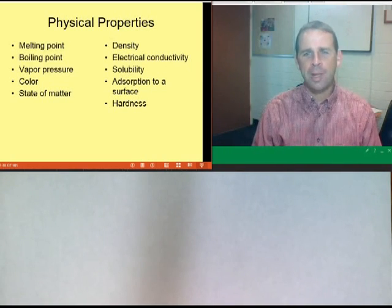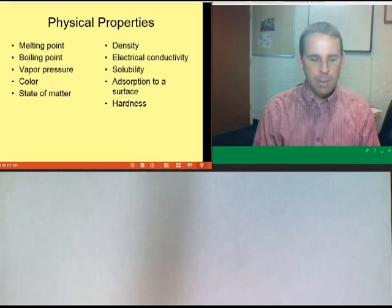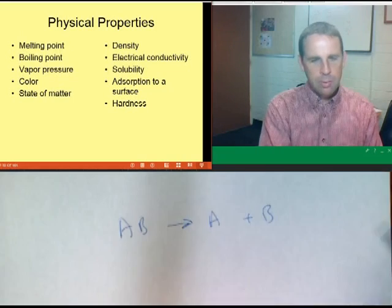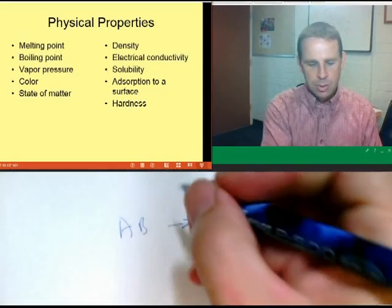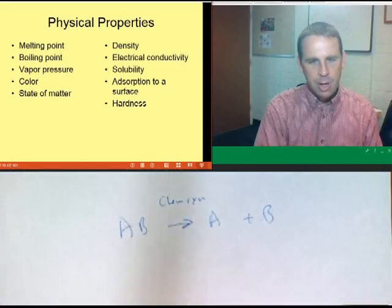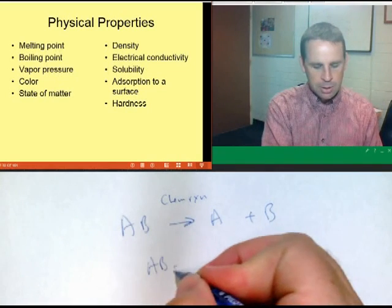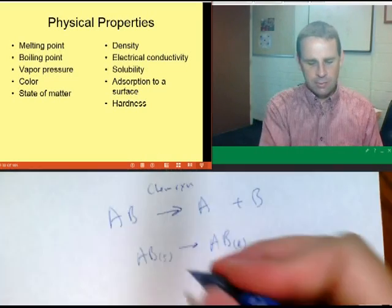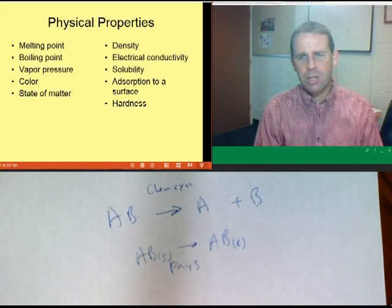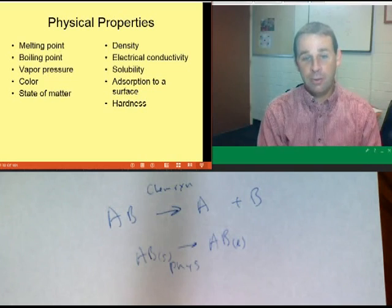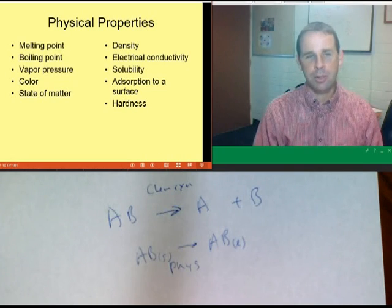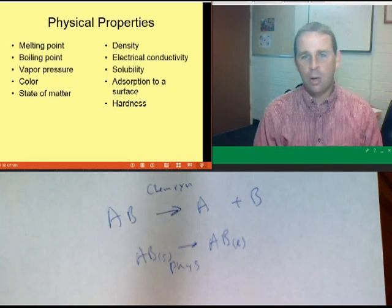Understanding chemical and physical reactions helps us think about physical versus chemical properties. A chemical reaction changes the connectivity between atoms — for example A + B going to new products. A physical reaction is something like a solid going to a liquid. Chemical properties always have to do with reactivity or changing how elements interact with each other. Physical properties include things like melting, boiling, vapor pressure, and color.